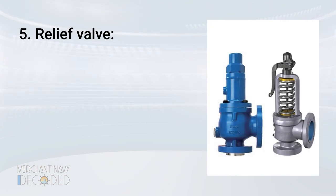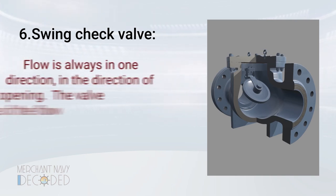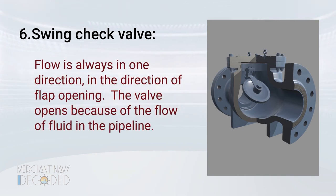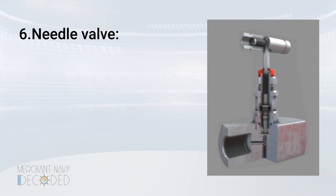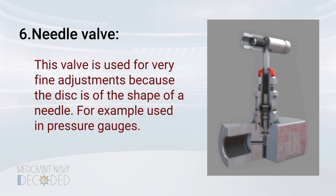Relief valve: it is used as a safety device to release over pressure in the system. The most common example is the valve on a pressure cooker. Swing check valve: flow is always in one direction, in the direction of flap opening, and the valve opens because of the flow of fluid in the pipeline. Needle valve: this valve is used for very fine adjustments because the disc is of the size of a needle — for example, it is used in pressure gauges.